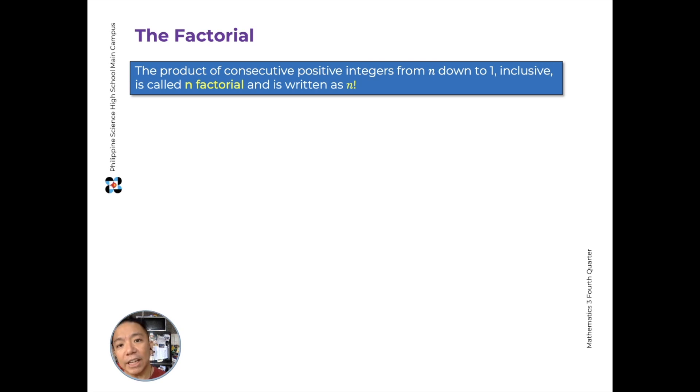This is called n factorial and we write it as n with an exclamation mark. Before we proceed to solving, it's important to say that 0 factorial is hard to explain why, but we'll define it to be equal to 1. Meaning, we won't explain why it's reasonable to say 0 factorial equals 1, but it equals 1.